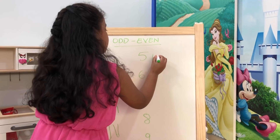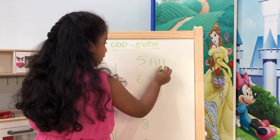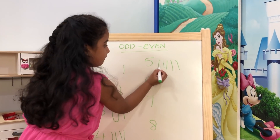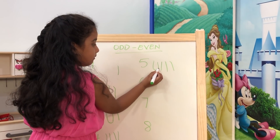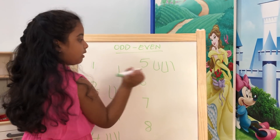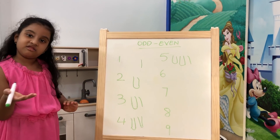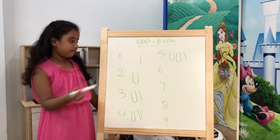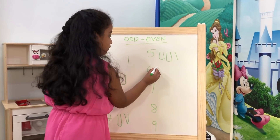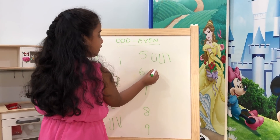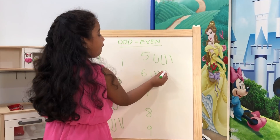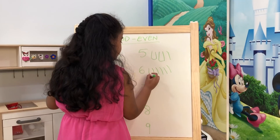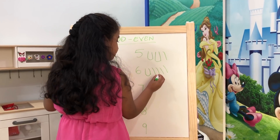One, two, three, four — one, two, three, four, five. It is odd. Next number is six.